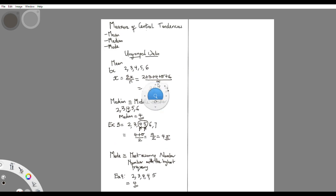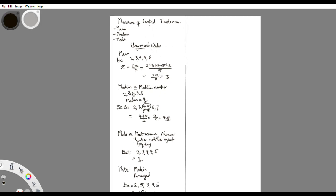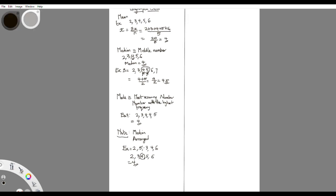To go over again — measures of central tendencies: the mean is simply the average, add everything up and divide by the number of values. The median is the middle number. The mode is the most occurring number. Remember, when solving for the median on ungrouped data, your data must be arranged before picking the middle number. We continue with grouped data in the next video — thanks for staying with us, bye.